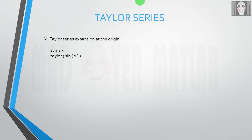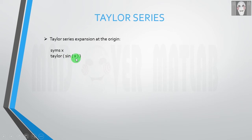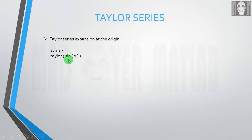Let us begin with the expansion of a function at origin using Taylor series. Suppose you want to expand sine x, which is a function of x. First you need to define this variable as a symbol using syms space x. After that you have to use the taylor keyword followed by parenthesis, and within it you specify the function.